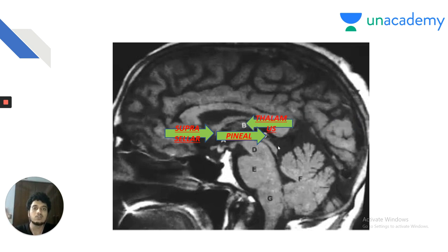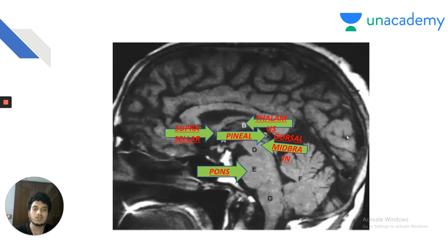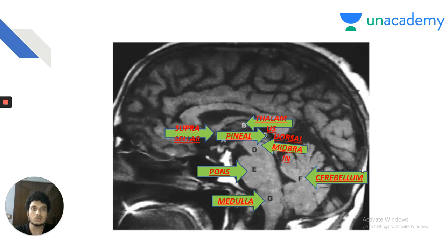B is the thalamus — thalamic lesions are associated with hemisensory loss because the thalamus is the relay center for all sensations including olfaction. D is the dorsal midbrain or tectum containing the superior and inferior colliculi. A is the suprasellar region, E is the pons, G is the medulla, F is the cerebellum. Brainstem strokes and syndromes are straightforward if you know the anatomy.